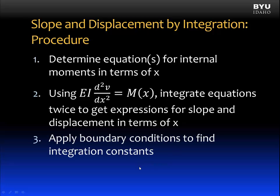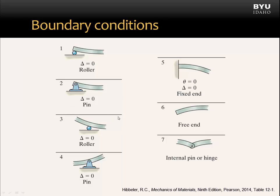Step 3 is to apply our boundary conditions to find the integration constants. When we integrate our moment equations, we incorporate integration constants which must be solved for. Our boundary conditions are found at our supports — where we have a support, displacement is zero. This applies to supports at the end or middle of the beam. For a simply supported beam there are two supports and therefore two boundary conditions. For a cantilever beam there is one support, but still two boundary conditions: displacement is zero and slope is also zero at the support. Free ends, internal pins, or hinges do not provide boundary conditions.